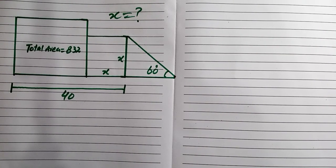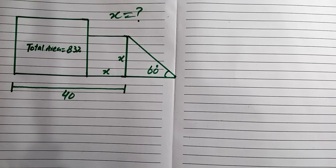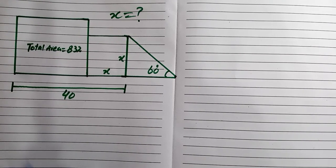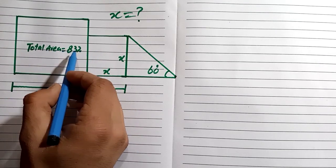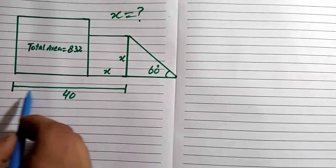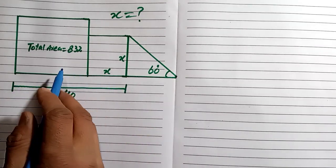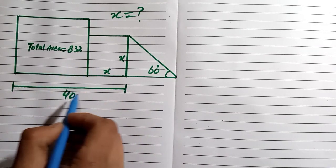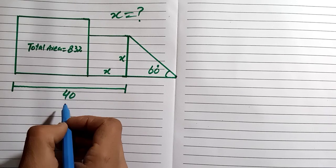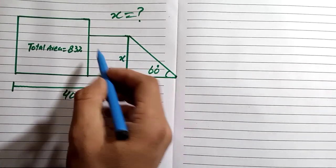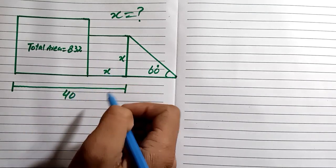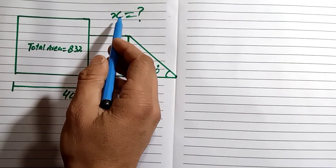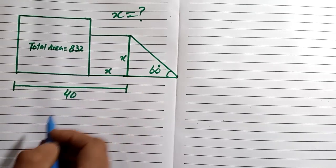Hello everyone, welcome to another geometric math problem. In this problem, we are given that the area of two squares is equal to 832, the total length is equal to 40, and the side of the smaller square is x. We are finding the value of x.